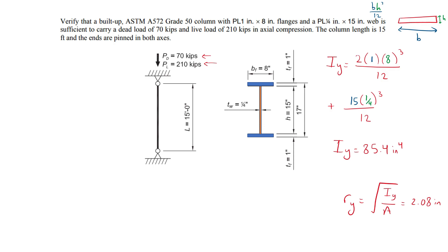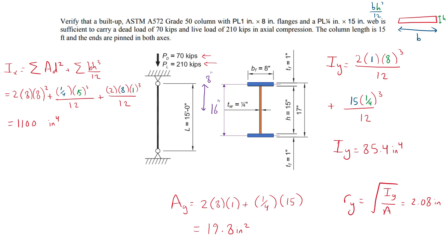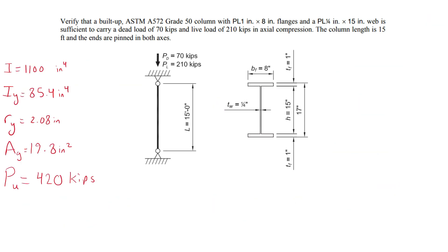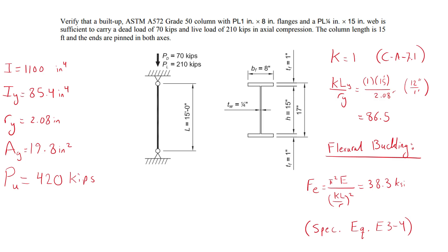The cross-sectional area is the sum of the rectangular areas, ignoring welds. The ultimate applied compressive load is calculated using the same load combination as before. Because Iy is less than Ix, y-axis slenderness governs, and we use it to calculate the elastic stress for flexural buckling.